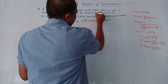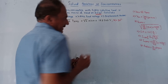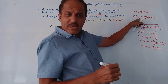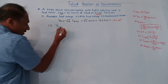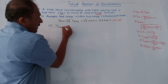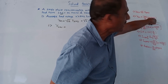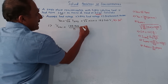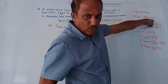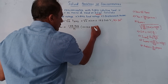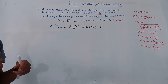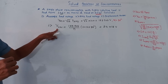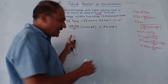The corresponding firing angle is given as alpha = 90 degrees. Now the first calculation is average load voltage. We have the formula: V_average = (Vm / π)(1 + cos α). Substituting: V_average = (169.705 / π)(1 + cos 90°) = 54.018 volts. This is the value of average output voltage.